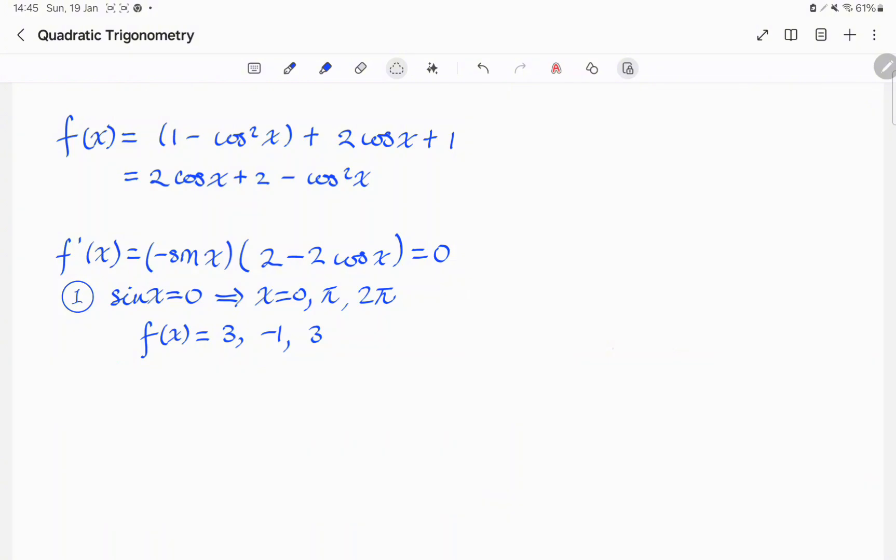In the first case, we have sine of x is equal to 0, and therefore x is equal to 0, pi, or 2 pi. f of x is therefore equal to 3, negative 1, or 3.